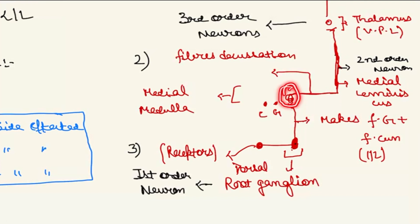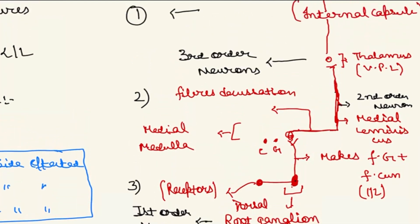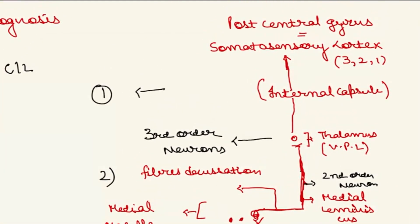In the medial medulla, decussation of the fibers occurs — they cross and run upward on the contralateral side. This crossed pathway is called the medial lemniscus, where the second order neuron originates. These fibers travel up to the thalamus relay station, and from the thalamus — which contains third order neurons — fibers pass through the internal capsule and reach the posterior central gyrus.